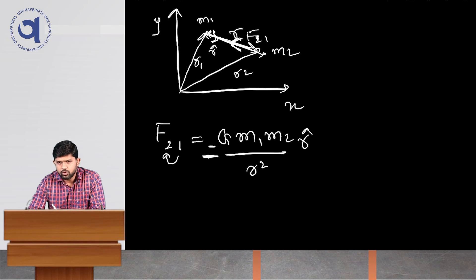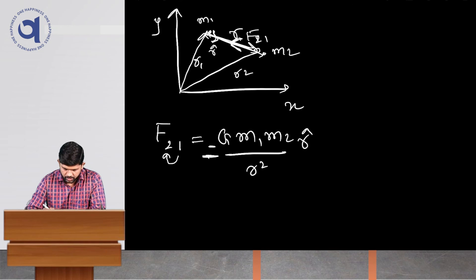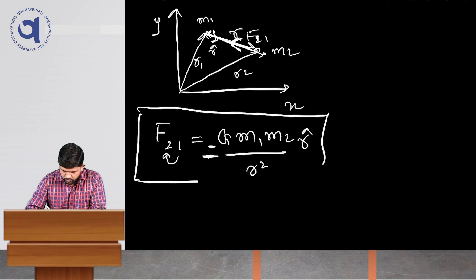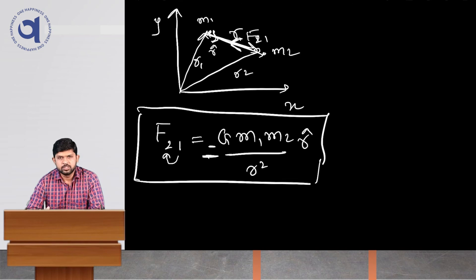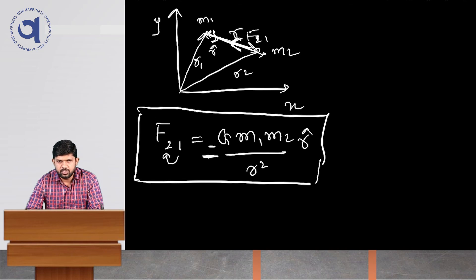Furthermore, the force always acts along the line joining the two masses. This is the vector form of the Universal Law of Gravitation. That is enough for today. In the next session we will see more things about gravitation. Thank you, friends.